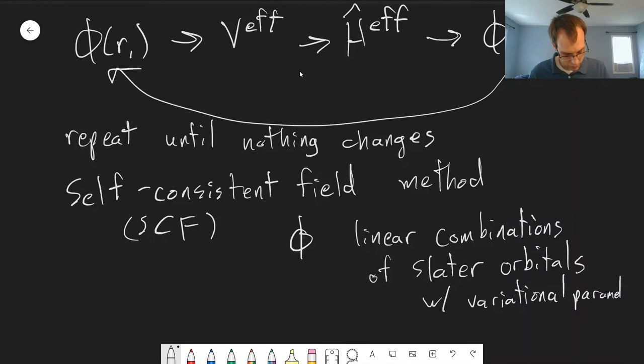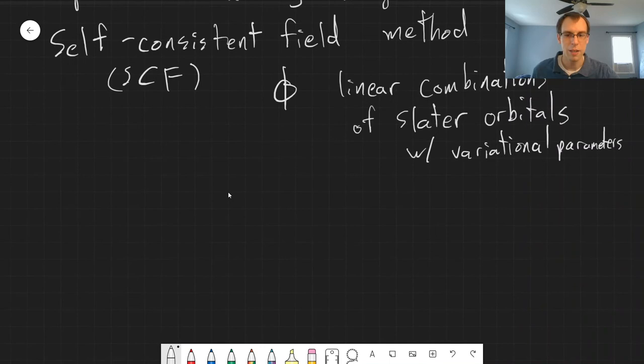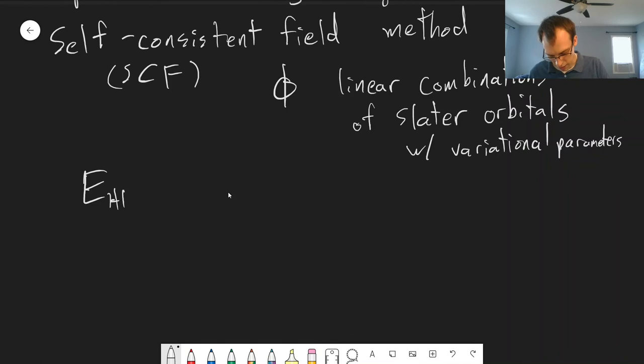Now, if we do this with the helium atom, we do this self-consistent field approximation, the Hartree-Fock energy is a little bit better still, but still not great, 2.8617 Hartrees. So still not as good as, like, the multiple orders of perturbation theory. And the main reason that this still overestimates the energy is that we're missing what's known as electron-electron correlation.